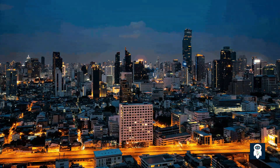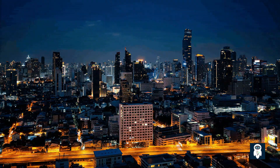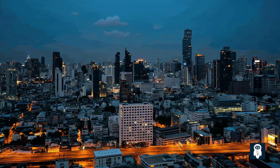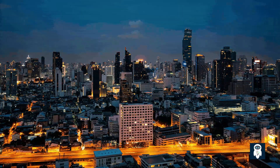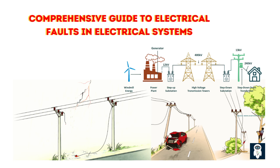Electricity is the backbone of our current worldwide infrastructure, powering everything from our homes and businesses to our transportation systems and communication networks. Our modern way of life would come to an interruption, resulting in major disruption and chaos if electricity were not available. However, have you ever considered the implications when issues arise?